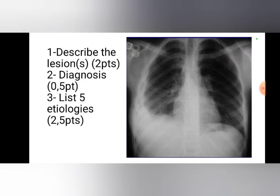For transudative causes of pleural effusion, you have heart failure, kidney failure such as nephrotic syndrome, liver failure, and malnutrition. If not malnutrition specifically, it can be protein-losing enteropathy. These are the systemic causes of pleural effusion.